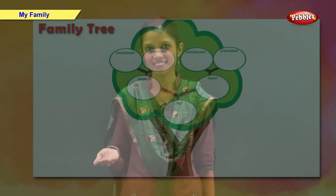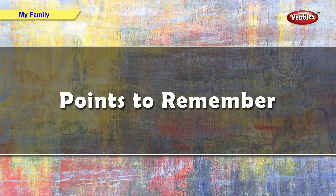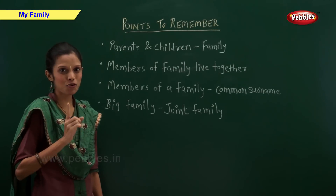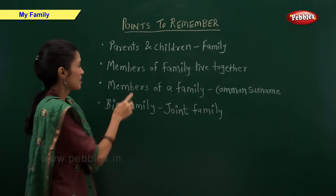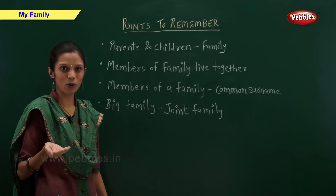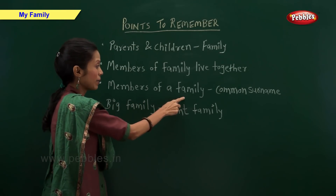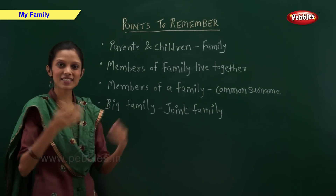Now let us have a look at a typical family tree. Points to remember: Parents and their children make a family. Members of a family live together in the same house and have a common surname. A big family is a joint family.